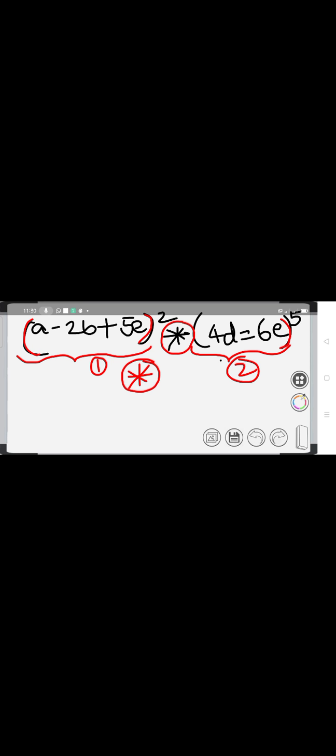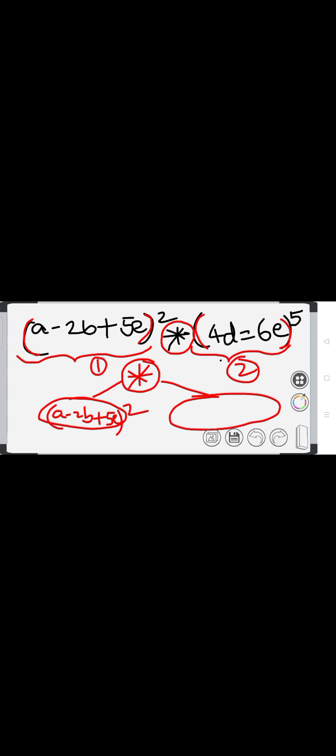You should find out the major operator by observing the expression. This expression consists of two separate parts because it is separated by well-defined brackets — the first bracket and the second bracket — so accordingly there are two major parts. In between these two major parts there is a multiplication operator. So on the left part of this multiplication operator we have A minus 2B plus 5E raised to 2 (square), and on the right part we have 4D equal to 6E raised to 5. This is step number one.